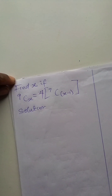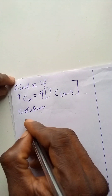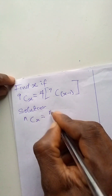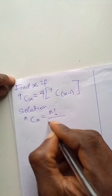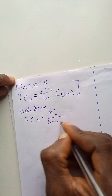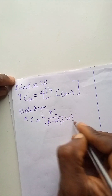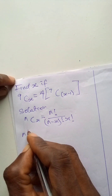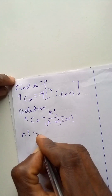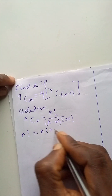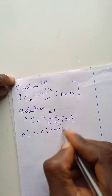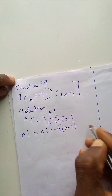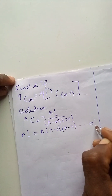Before we proceed, let us remind ourselves that if we have n combination x, it is n factorial over n minus x factorial times x factorial. And n factorial is equal to n times n minus 1 times n minus 2, and so on until we get to 0 factorial.